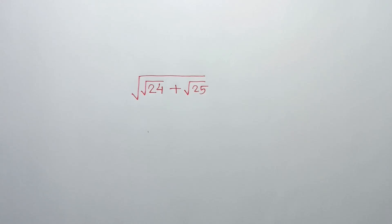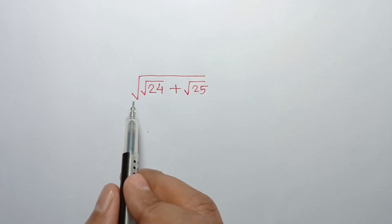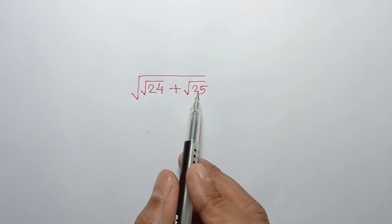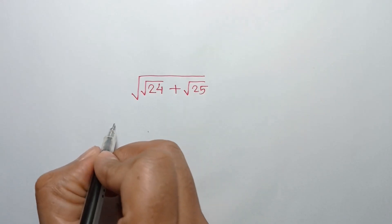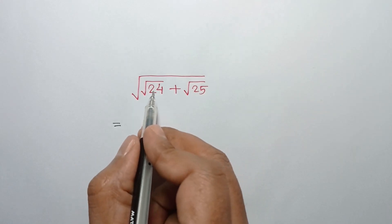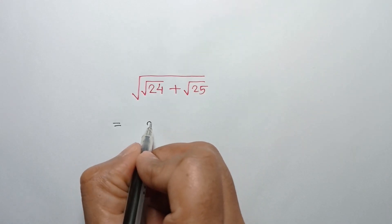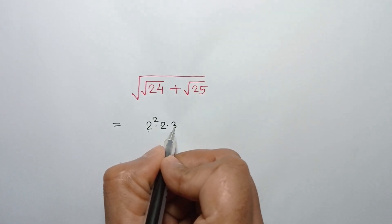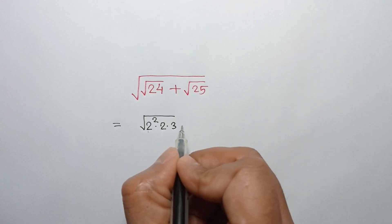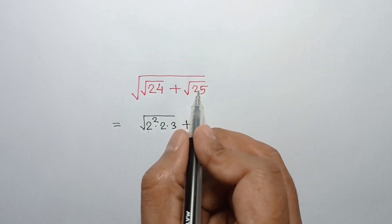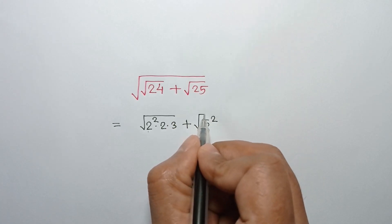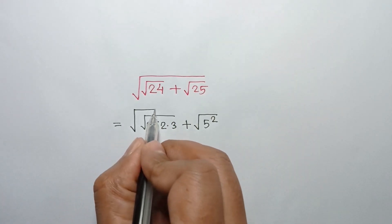In this video I am going to show how to simplify square root of square root of 24 plus square root of 25. 24 can be written as 2 squared times 2 times 3, and square root of 25 can be written as 5 squared.